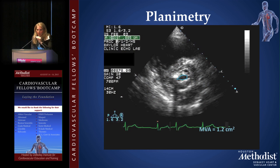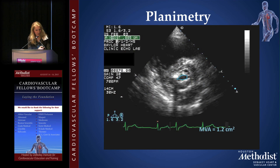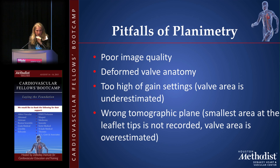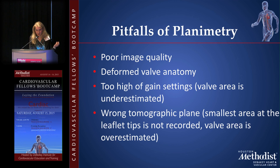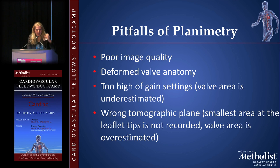We can also planimeter the valve to determine severity of mitral stenosis — tracing it gives us the mitral valve area; in this example, 1.2 centimeters squared. However, planimetry has problems: poor image quality makes tracing impossible; very deformed valve anatomy prevents accurate tracing; gain settings that are too high cause blooming artifact from calcification, leading to overestimation of severity; and if you're not in the right plane — at the annulus rather than the tips — you'll underestimate severity.